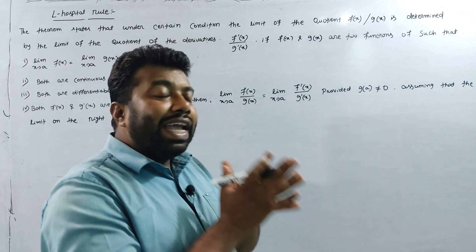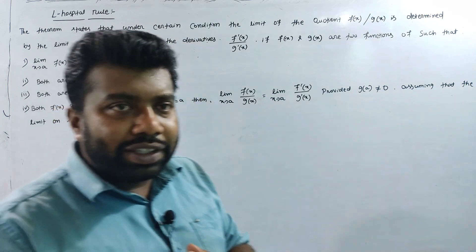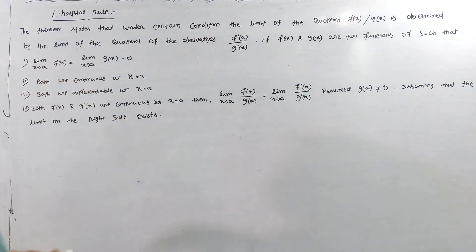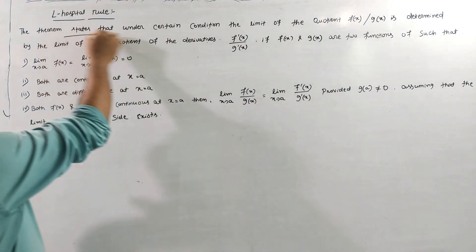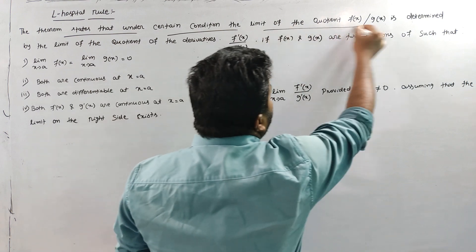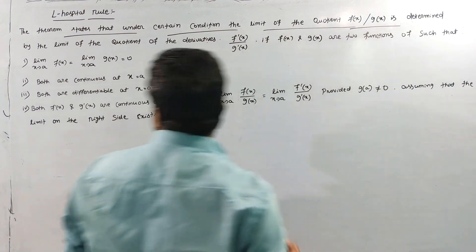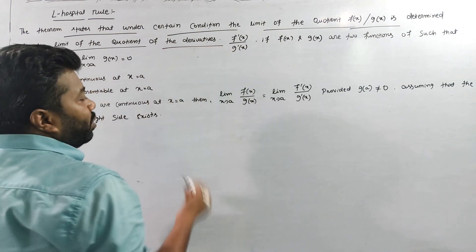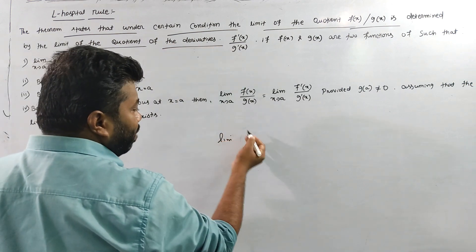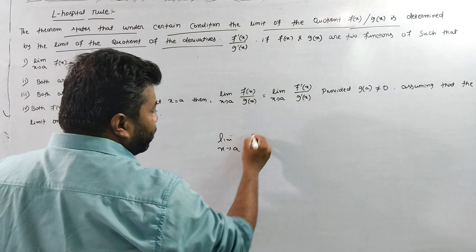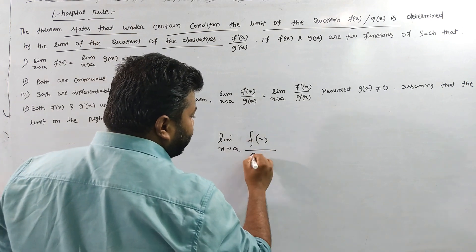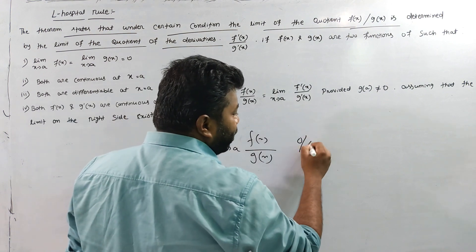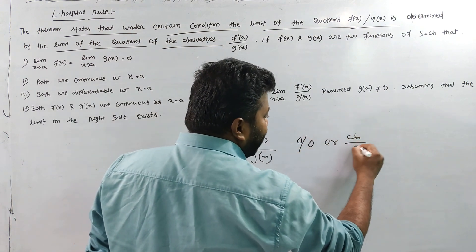The L'Hôpital rule states that under certain conditions, the limit of the quotient f(x) by g(x) is determined by the limit of the quotient of the derivatives. This applies to the 0/0 form and the infinite/infinite form.